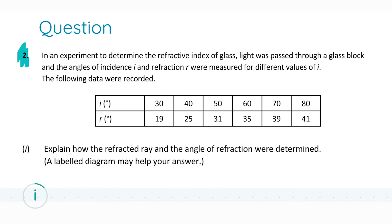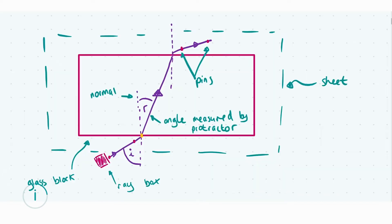In part one we were asked to explain how the refracted ray and the angle of refraction were determined, and it says that a labelled diagram may help your answer. The way I'd always tackle this type of question is by drawing a labelled diagram. I always find it easier to use the labelled diagram to structure my final answer, because these types of questions want you to write a small paragraph explaining the important pieces of the diagram.